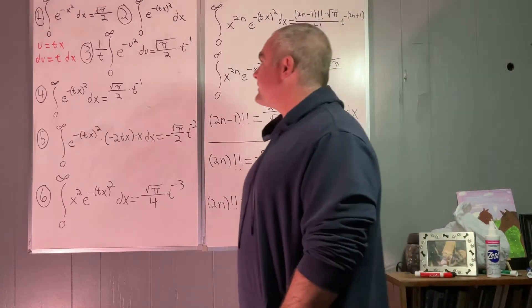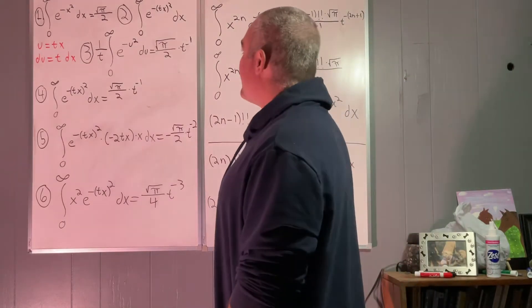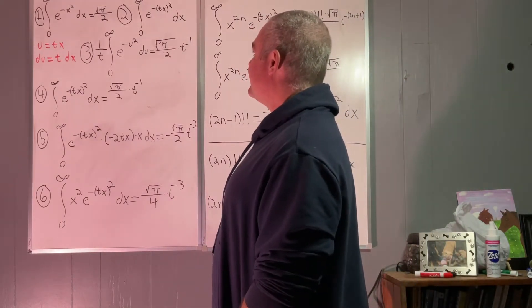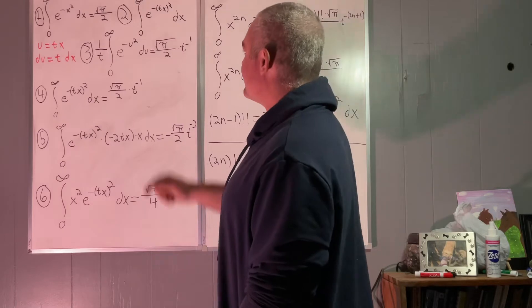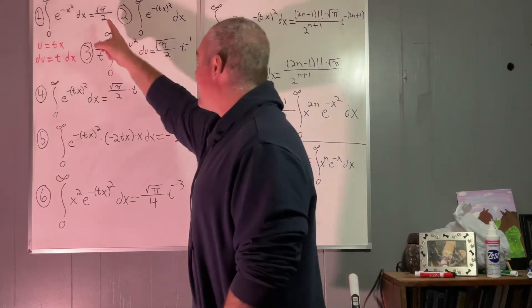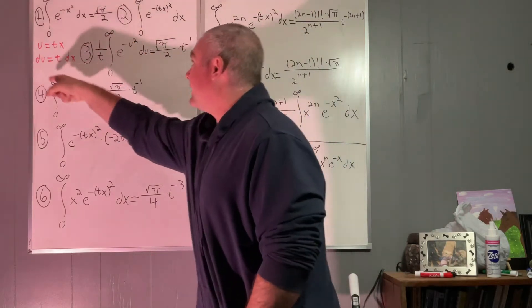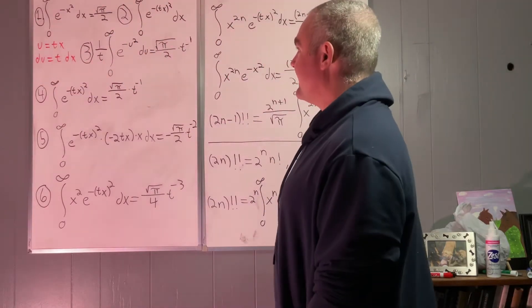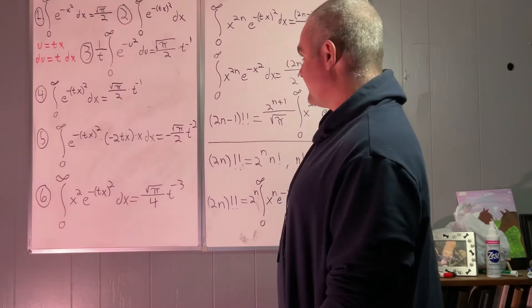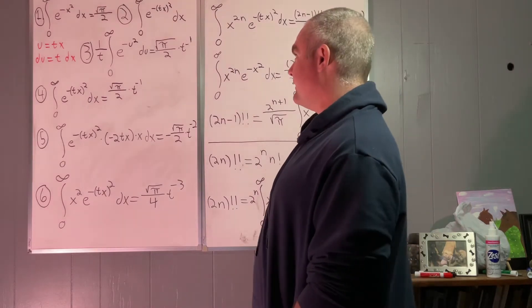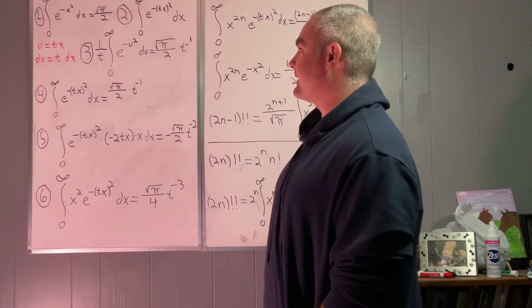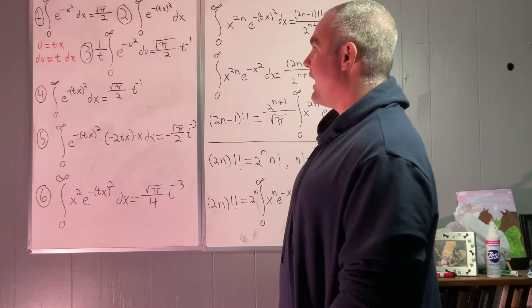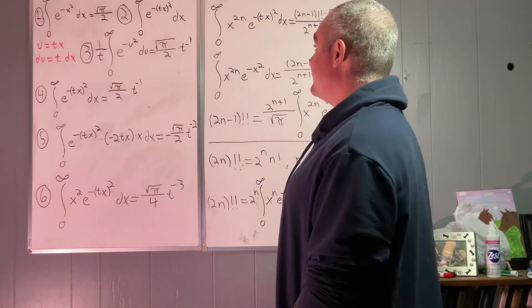The first part of the demonstration just involves recalling the Gaussian integral: the integral from zero to infinity of e to the negative x squared dx is equal to the square root of pi over 2.